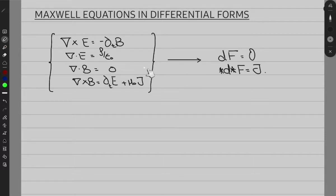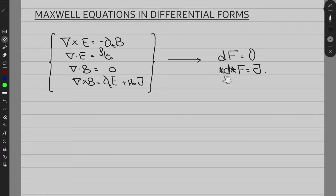Why are we converting our four equations into two equations? The reason is that we physicists would like to have the most general form of an equation — we want to shorten our equations as much as we can without losing any information. This is one way we can do it using the language of differential forms, which includes this Hodge operator star.